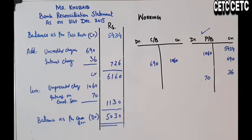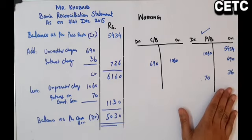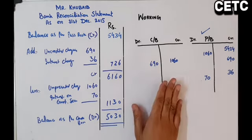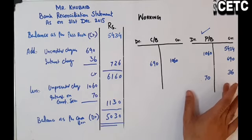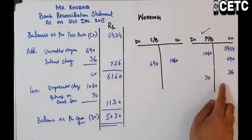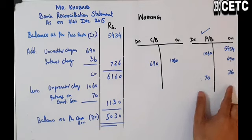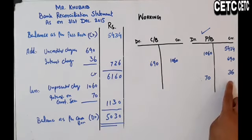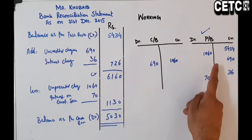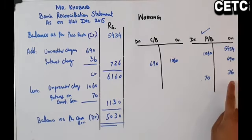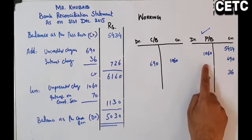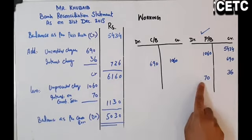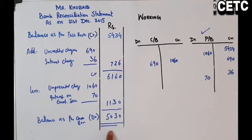یہ طریقہ ہے question کو solve کرنے کا — پہلے آپ جس book کو deal کر رہے ہیں اس سے فرق نہیں پڑتا کہ Cash Book ہے یا Pass Book۔ جو balance دیا جائے آپ نے اس book کے angle سے دیکھنا ہے: جو کام ادھر ہو گئے ادھر نہیں ہوئے وہ ادھر کریں، اور جو ادھر ہو گئے ادھر نہیں ہوئے وہ reverse کر دیں۔ 36 پہلے debit کیا تھا آپ نے اس کو reverse کر کے credit کر دیا، 70 credit تھا آپ نے اس کو debit کر دیا — تو آپ کا balance نکل آیا Cash Book کا۔ امید ہے آپ کو سمجھ آگئی۔